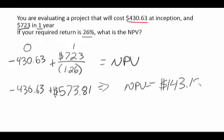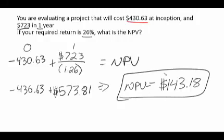The basic question is: should we do this? Yes, absolutely — I am generating a twenty six percent return on my money, plus I have this extra amount of one hundred forty three dollars and eighteen cents. So this is absolutely something we should be doing.